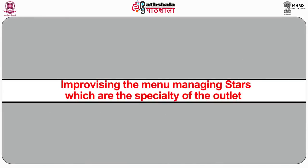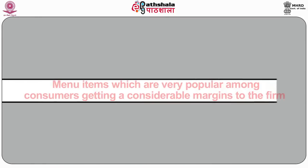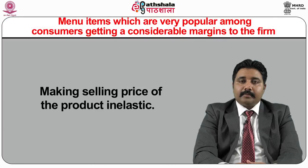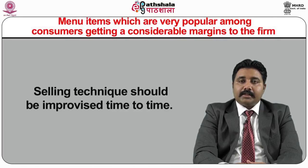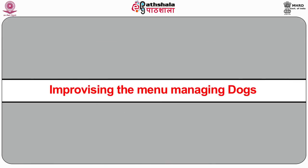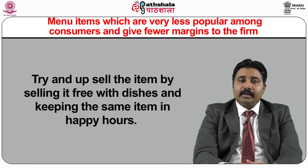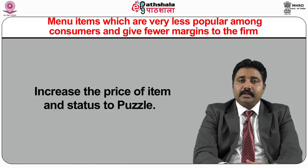Managing stars — the speciality of the outlet — involves menu items that are very popular and give considerable margins to the firm. Strategies include maintaining strict specifications, prominently highlighting them in the menu, making the selling price inelastic, and continuously improving selling techniques. Managing dogs — items that are very less popular and give less margins — involves considering replacing the item based on current market trends, upselling by offering it free with other dishes during happy hours, or increasing the item's price and repositioning it as a puzzle.